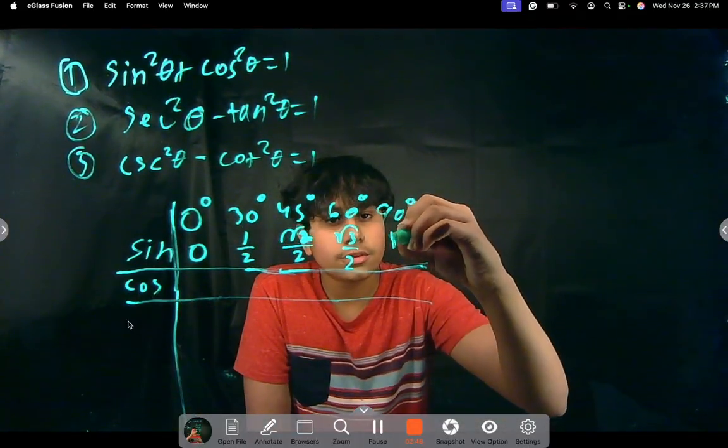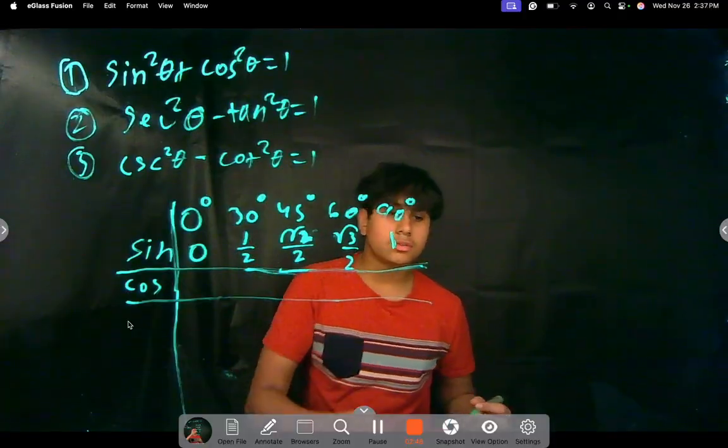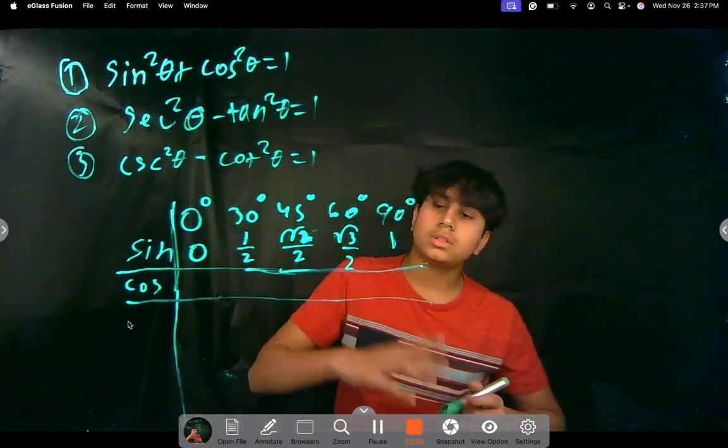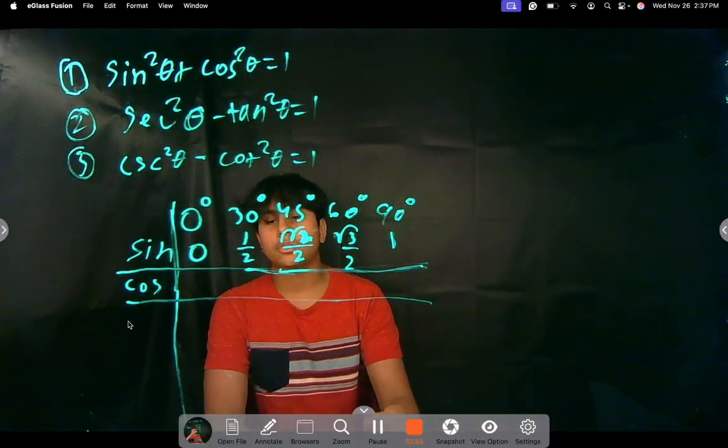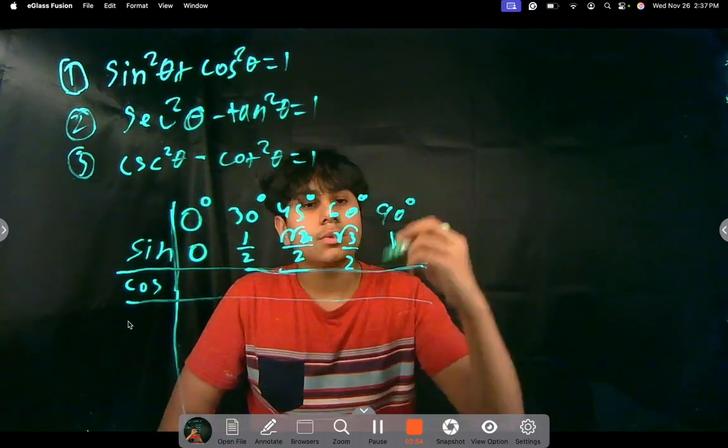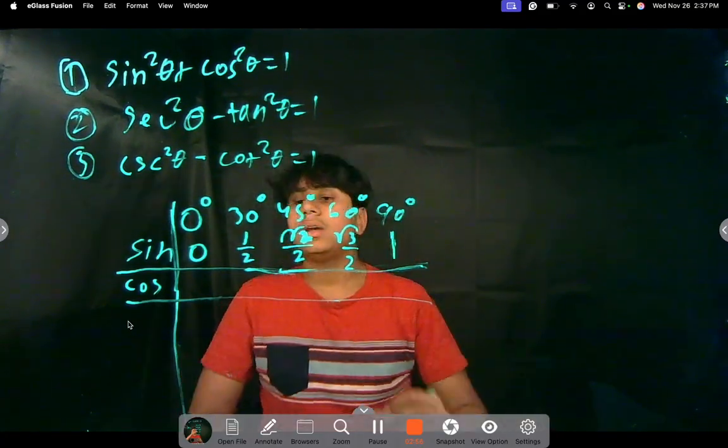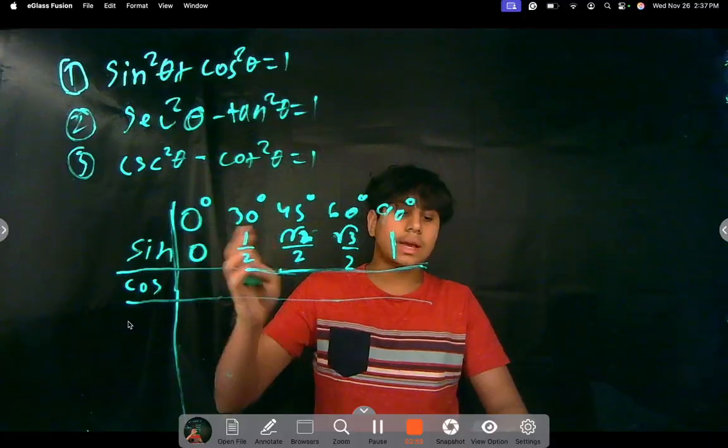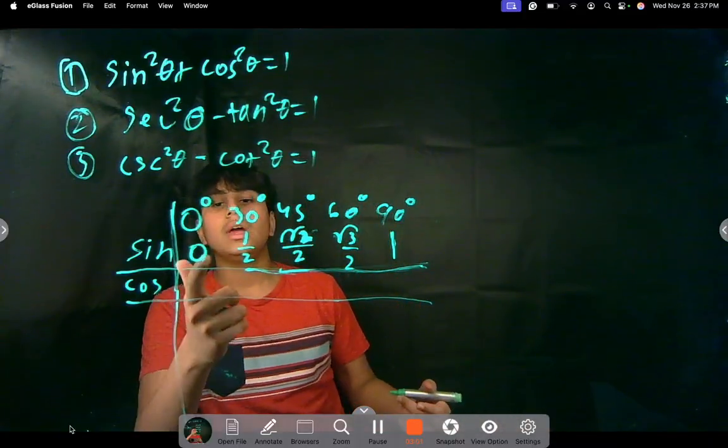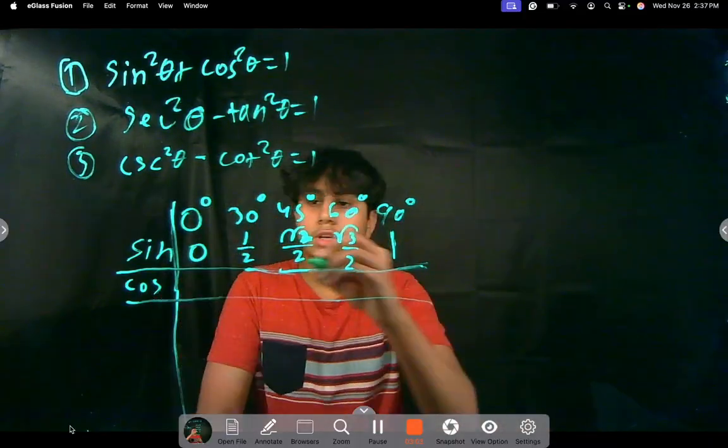So as I said before, if you know these values for 0, 30, 45, 60, 90, you can find it for the entire chart, for all of them. So how this works is, for cosine, it's going to be the exact reverse order of this. So cosine of 0 is going to be 1, because you start from the end, it's going to be the opposite order.